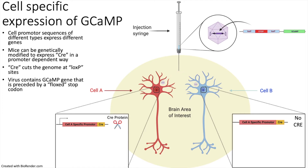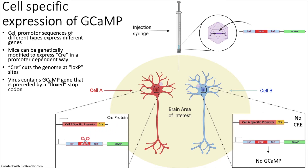The virus then inserts its sequence into the genome of all cells at that injection site. In the cells that do not express Cre, the stop codon prevents expression of GCaMP. However, in the cells that do express Cre, the LoxP sites are targeted and the stop codon is cut from the genome. Now, Cre-expressing cells will also express GCaMP. This process allows for cell-specific expression — only cells that express the gene of interest will also express the GCaMP protein.